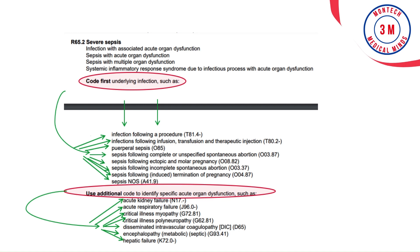In the tabular list at R65.2 Severe Sepsis, there is an instructional note of 'Code First' the underlying condition listed below as applicable. Also, an instructional note of 'Use Additional Code' can be found at R65.2, meaning an organ dysfunction code is to be assigned if applicable.